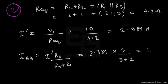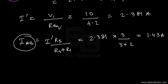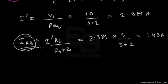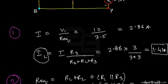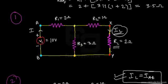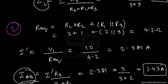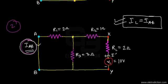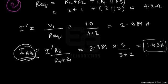Solving this gives I_AB = 1.43 amperes. Comparing the two results: I_L from Network 1 is 1.43 amps, and I_AB from Network 2 is also 1.43 amps. When the source was originally between terminals A and B, I_L was 1.43 amps, and when we moved the source to between X and Y, the current through A and B is also 1.43 amps.